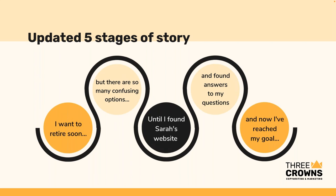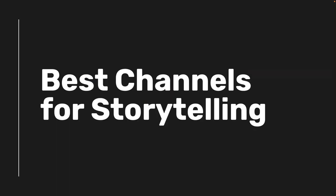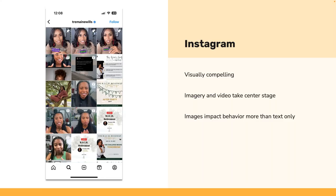There are a lot of places you can push out your message, but what are the best channels for incorporating story-based content? I'll give you five examples. First up: Instagram. Tremaine Willis is my example here. Instagram is visually compelling — imagery and video take center stage. Research from UC Davis shows emotionally charged images change behavior more than just words. The more we lean into images and video, the better storytellers we become.